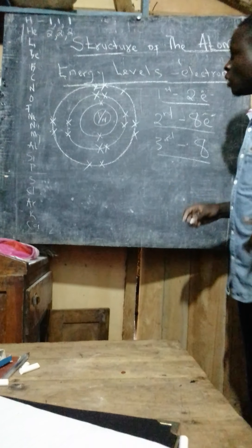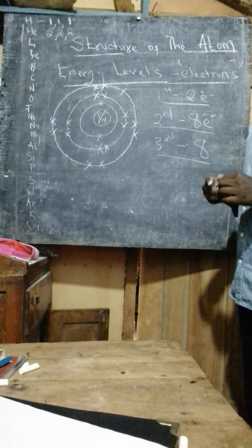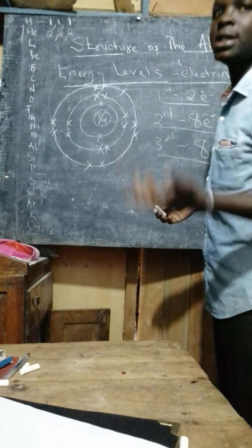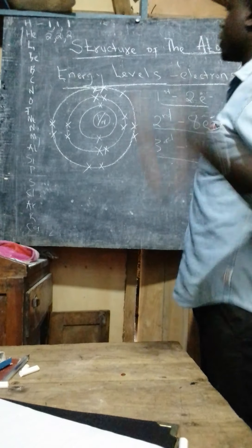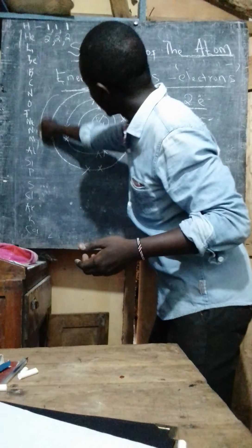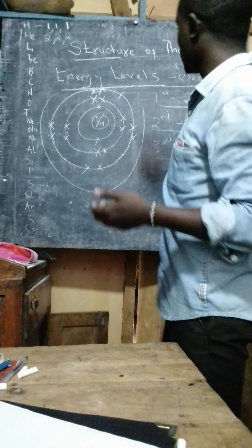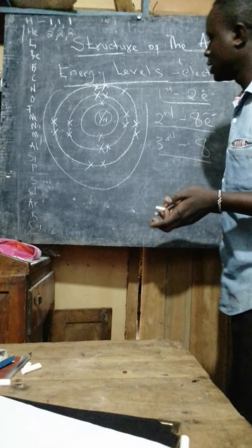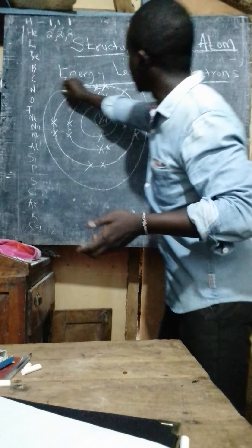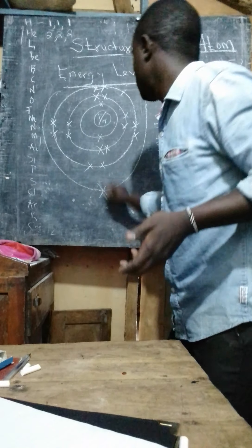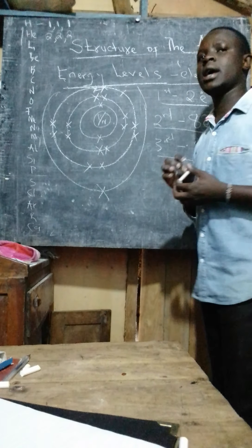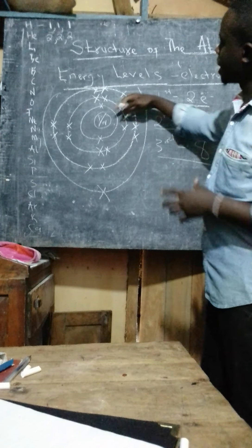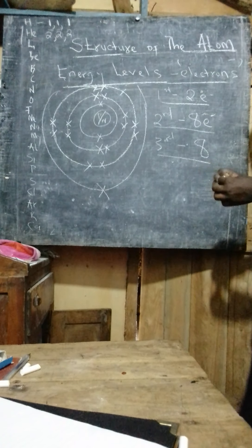So if you have ten electrons, you put the first two in the first energy level. That leaves you with eight electrons. You then place those eight electrons on the second energy level — one, two, three, four, five, six, seven, eight. Remember, the second energy level can carry only a maximum of eight electrons.